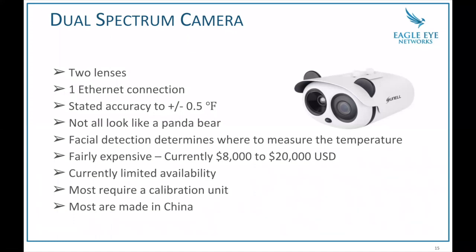These cameras are not cheap — currently running anywhere between $8,000 and $20,000. I'm sure some cost more, and there might be a few that cost less. This isn't meant to be a price list, just to give you an idea of the cost. Not only are they expensive, they're also hard to find at the moment. Some are being prioritized for high-risk situations like hospitals or first responder situations, but they're not easy to find even if you have the money to spend.